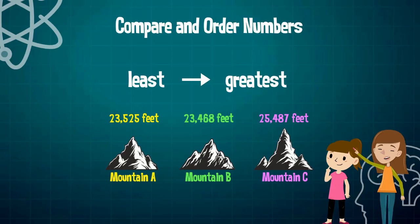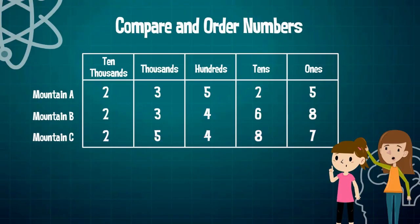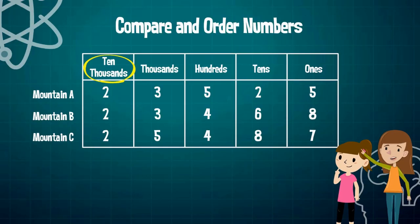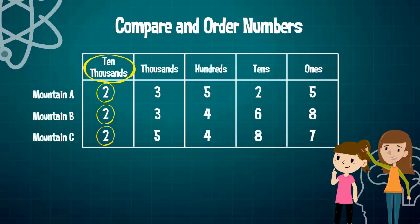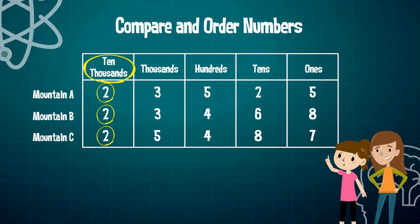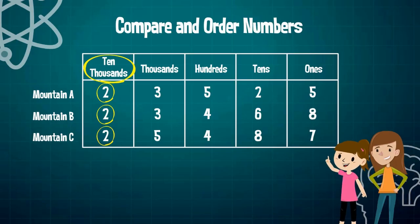Step one would be align all the numbers by place value. Step two would be compare all digits in each place value starting at the greatest place value. If you look at these three numbers, we can see that the greatest place value is in the ten thousands. We have the digit two in Mountain A, we also have another digit two in Mountain B, and we have another digit two in Mountain C. So since they're all the same, what do we do next? We move on to the next place value, which is in the thousands.